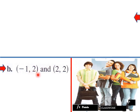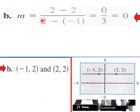And then B will be negative one, two, and then two, two. So we plug that into our slope formula. Two minus two, two minus two, then two minus negative one. We get zero over three. So it's a flat line here. It has a zero slope. So it's a horizontal line.